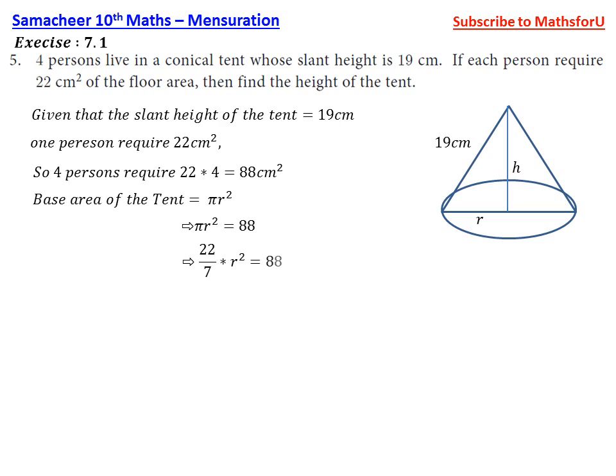So πr² = 22/7 × r² = 88. Therefore r² = 88 × 7/22. Since 22 goes into 88 four times, r² = 28.